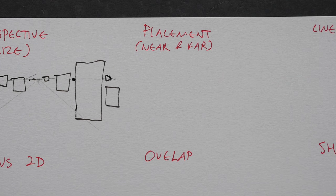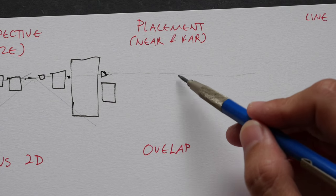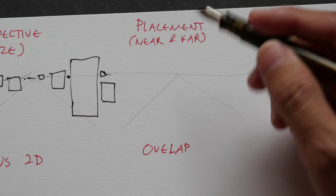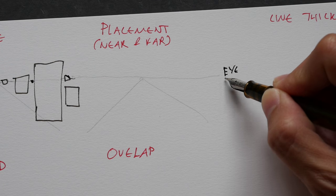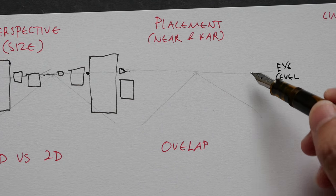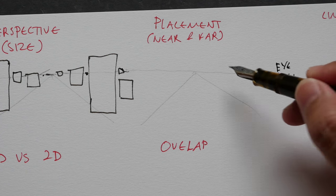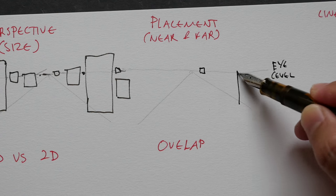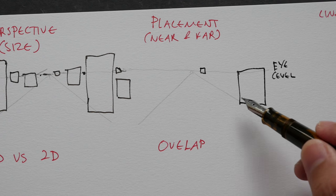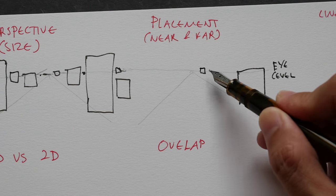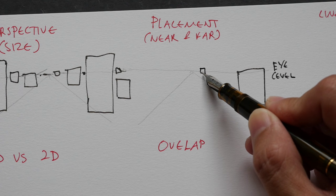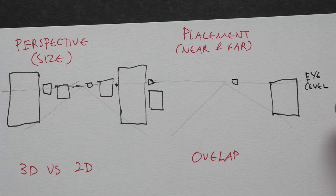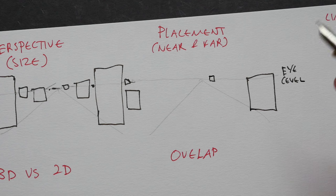The second technique is called placement — quite similar to the first technique. Objects that you place close to the eye level will appear smaller, and objects that are further away from the eye level will appear bigger. When you use placement you need the eye level as a basis of comparison.